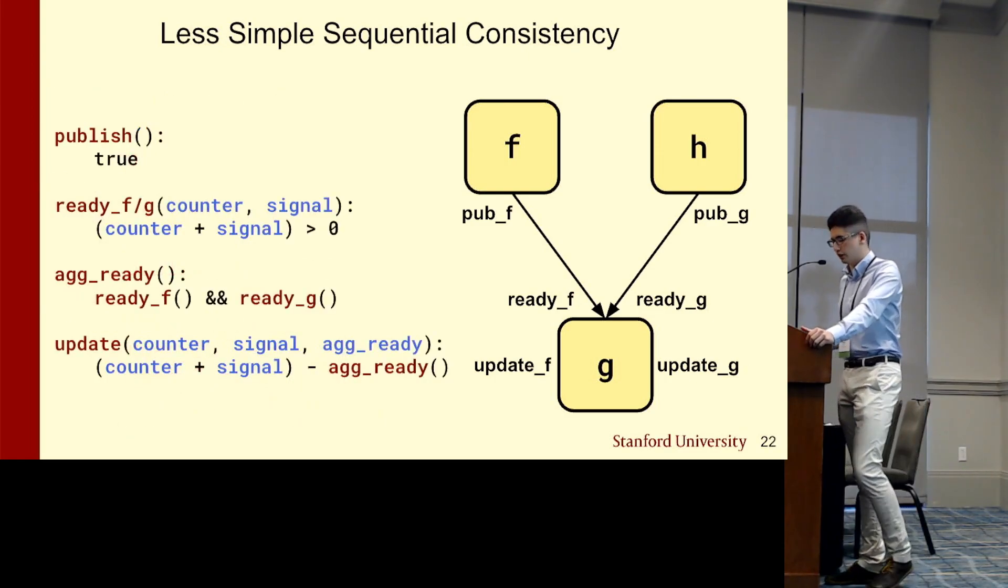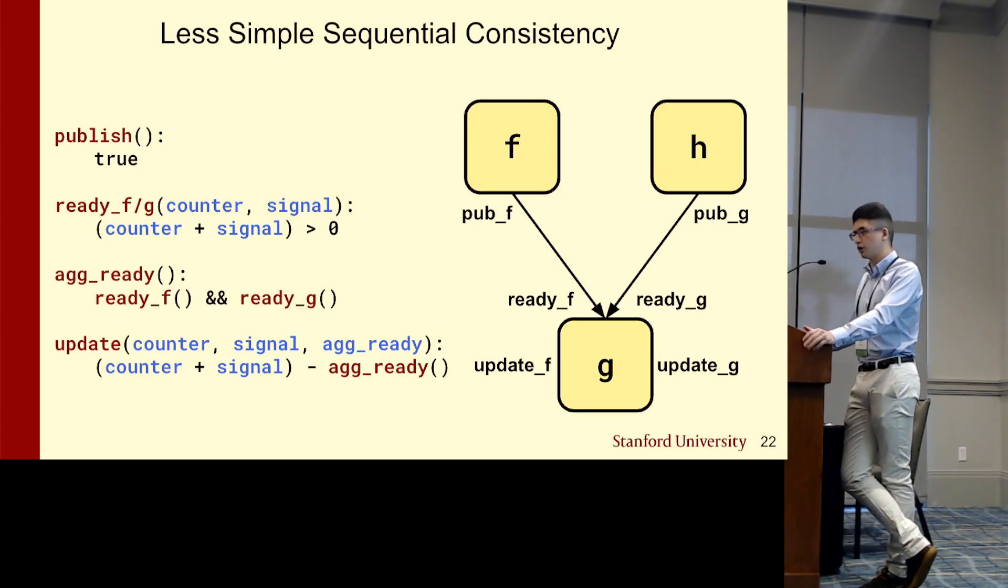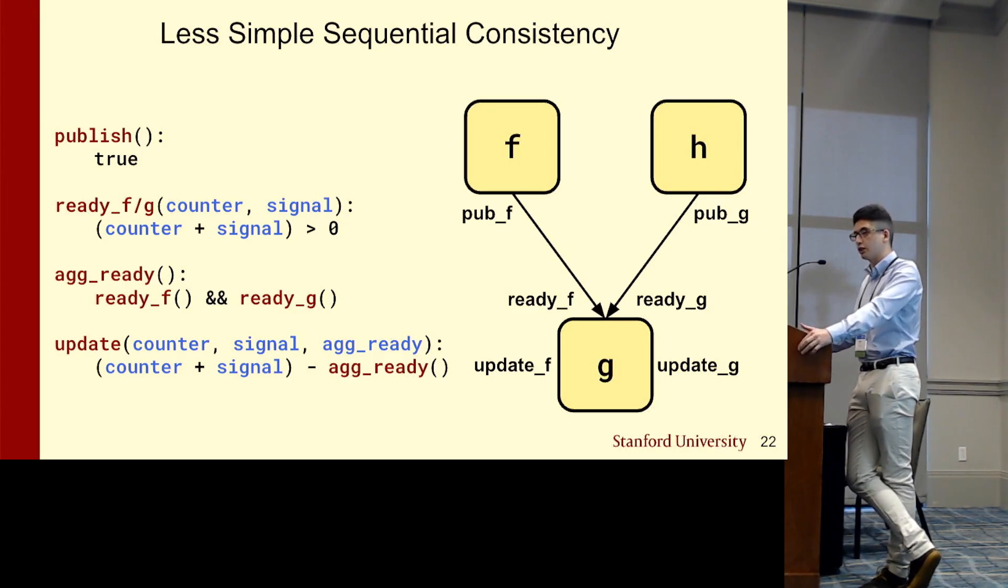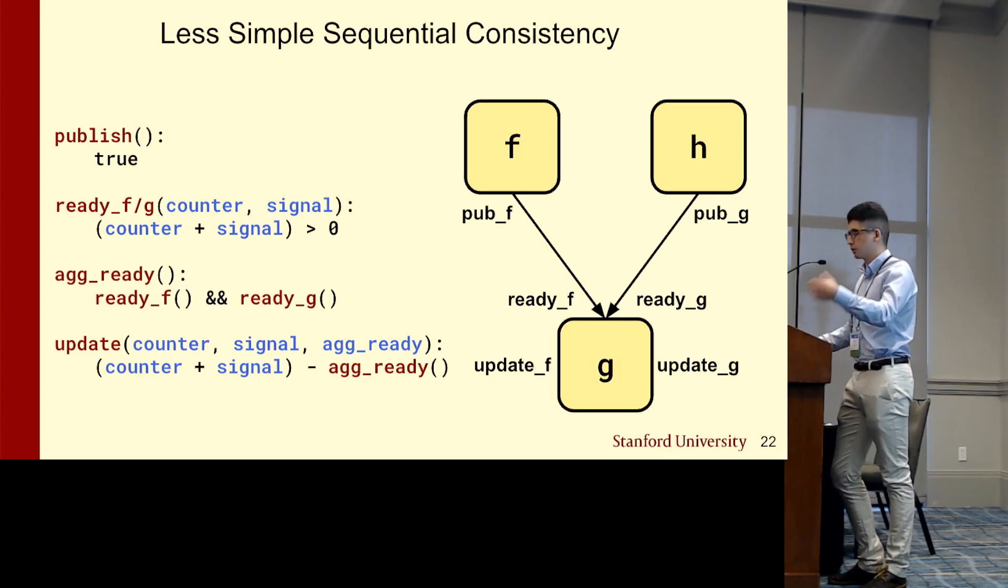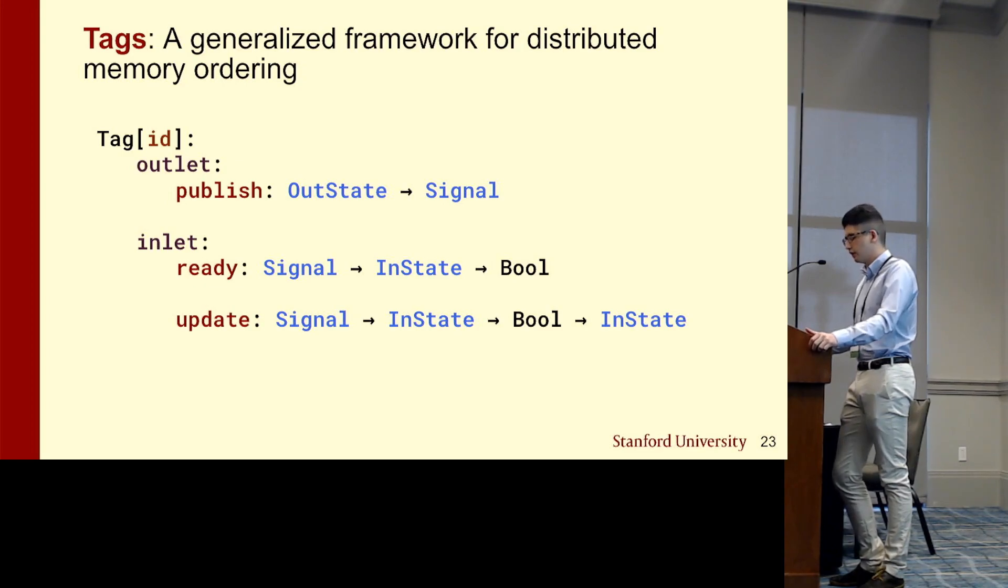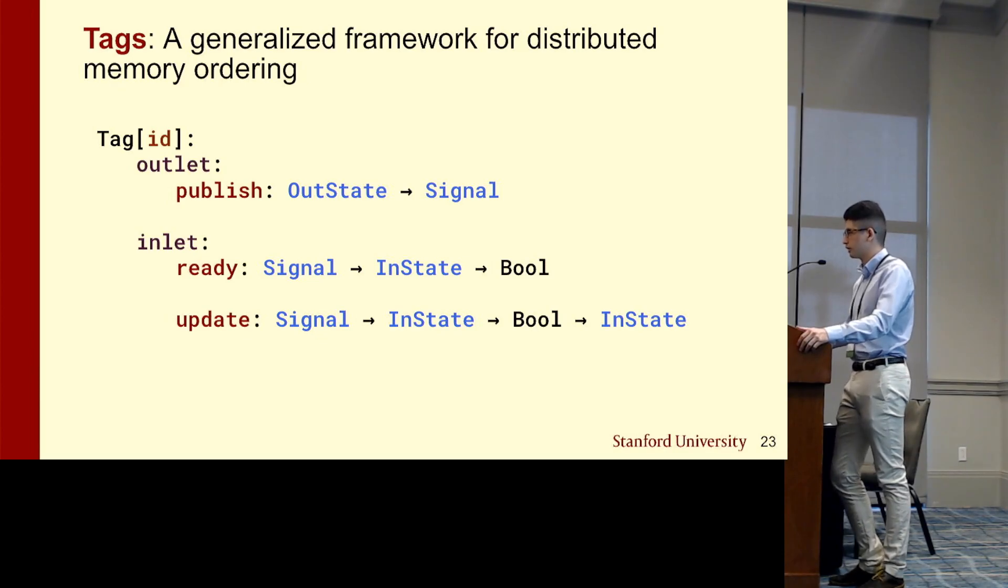So we've essentially defined three functions here. Publish gets called when a write occurs and signals the token downstream that the new data can be read. Ready then gets triggered to allow the reader to proceed based on some custom readiness condition. And then update is needed to track local state in the case of multiple inputs. In this case, the ready signal consumed by the actual consumer is actually an aggregate of multiple different ready signals, and here we use a Boolean conjunction between them. But you can use any Boolean function to aggregate multiple ready signals. To maximally exploit the available reconfigurability of RDAs, we can formalize our framework slightly more generically, where signal and the update type can be any polymorphic type. And the functions themselves can be any black boxes given that they satisfy whatever resource constraints are set by the hardware.